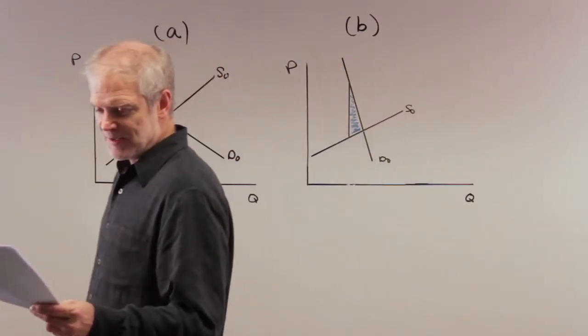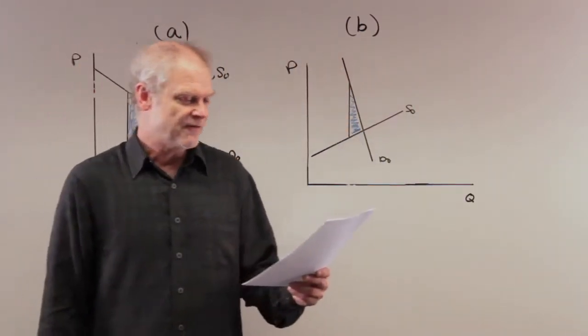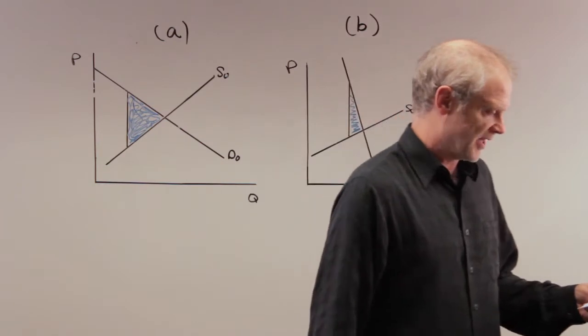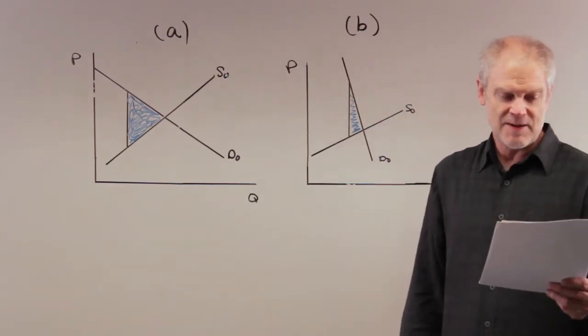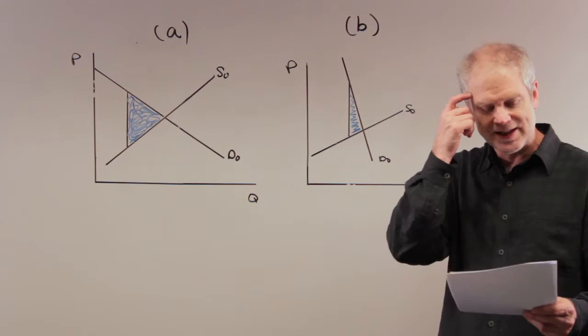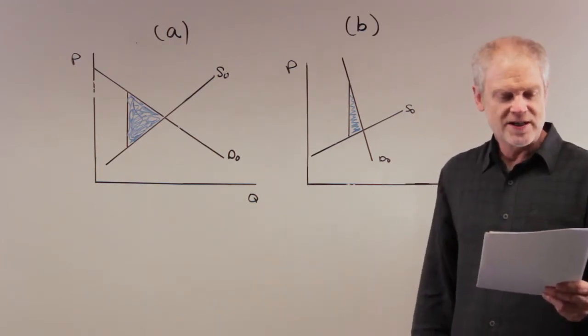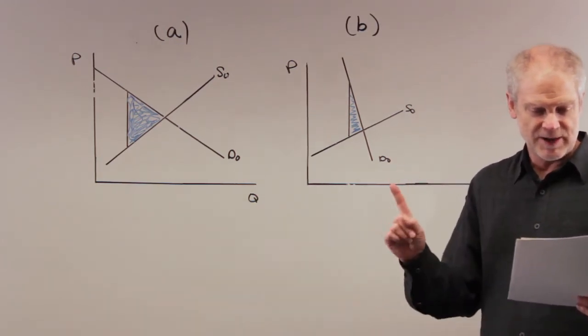It says panel A and B illustrate that a four dollar tax placed on a market. In comparison to panel A, panel B illustrates the following statements: A - when demand is relatively inelastic, this is panel B now, when demand is relatively inelastic, the deadweight loss of a tax is smaller than when the demand is relatively elastic.